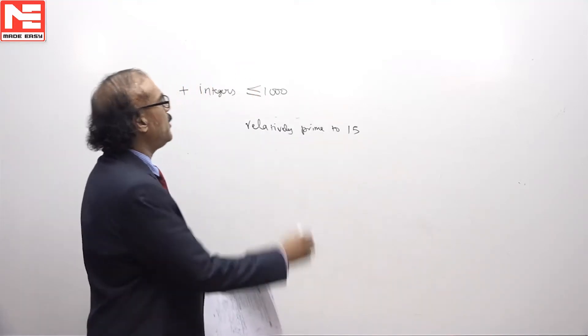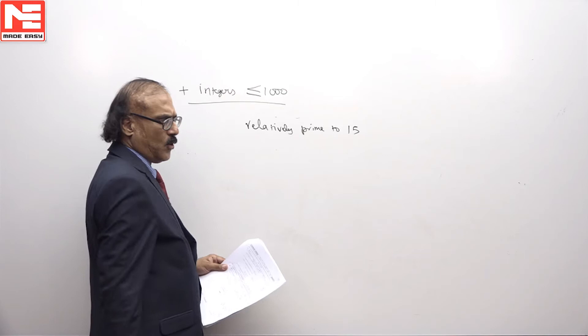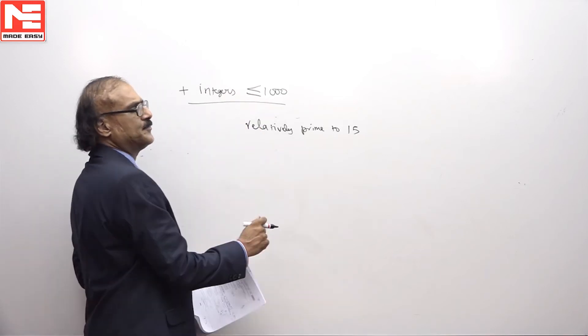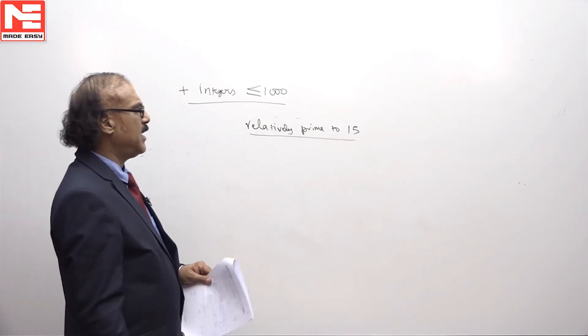In this problem we wish to find out how many positive integers less than or equal to 1000, that is 1 to 1000, are relatively prime to the number 15.